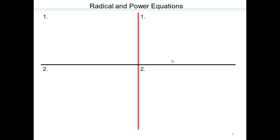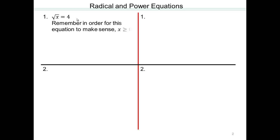Let's take some examples. Square root of x equals 4. When you look at an equation, you must know what the solutions are going to be like — are there any restrictions? We cannot have x be a negative number in order to have real solutions, so x must be greater than or equal to 0. Squaring both sides gives x equals 16. Check: square root of 16 is 4, so it works.